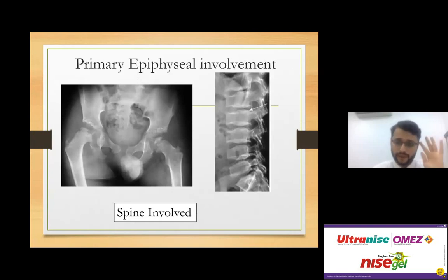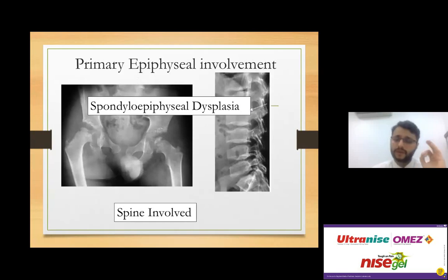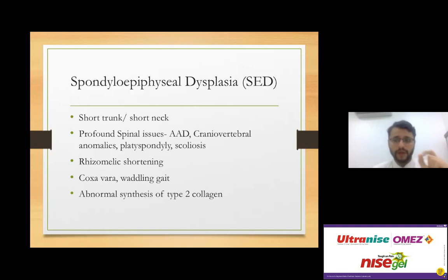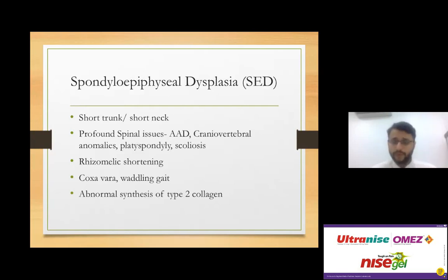When the epiphysis is involved with significant spine involvement, this is spondyloepiphyseal dysplasia — spondylo for spine, epiphyseal for epiphysis. This is relatively common, presenting like Professor Flitwick: short trunk, profound spinal issues. Critically, always screen the cervical spine — these patients have atlantoaxial dislocations, craniocervical anomalies, and scoliosis. Unless the cervical spine is screened and cleared, we should not embark on any corrective orthopedic surgery.